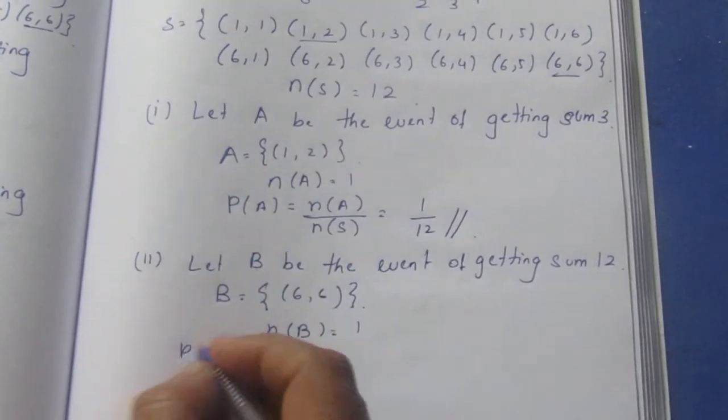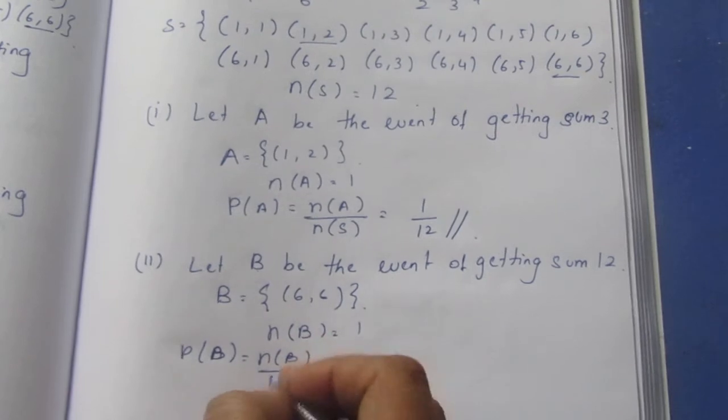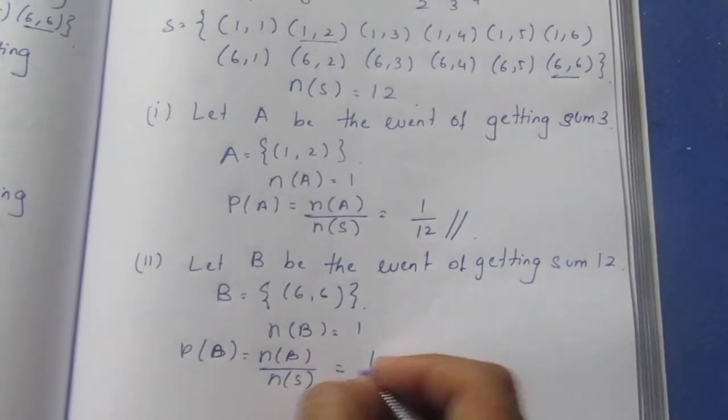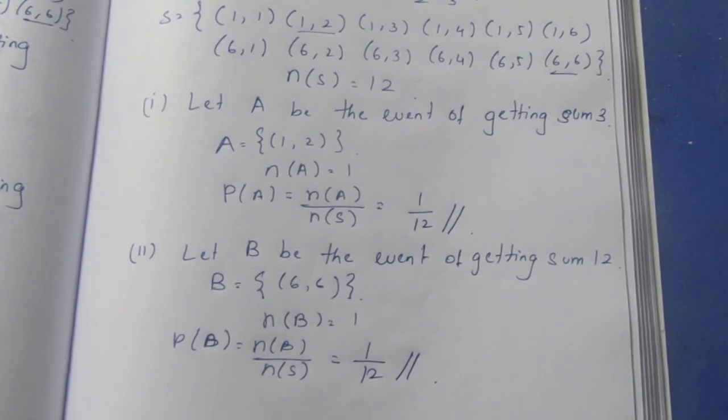So P(B) = n(B)/n(S) = 1/12. This is the answer. Thank you.